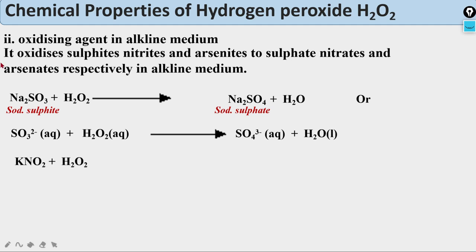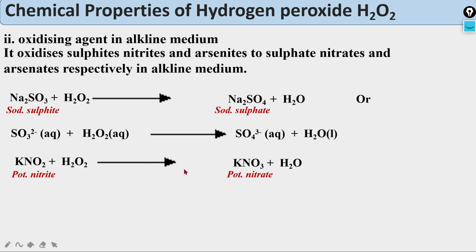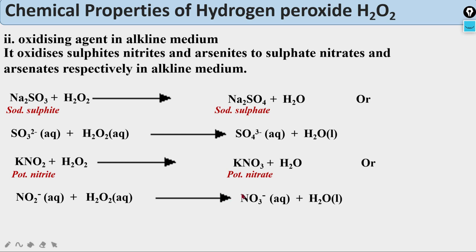Next, the reaction of potassium nitrite with H₂O₂: potassium nitrite reacts with hydrogen peroxide to give potassium nitrate and water. This is an oxidation reaction in alkaline medium. Ionically: NO₂⁻(aq) + H₂O₂(aq) → NO₃⁻(aq) + H₂O. So this is the second electronic oxidation reaction in alkaline medium.